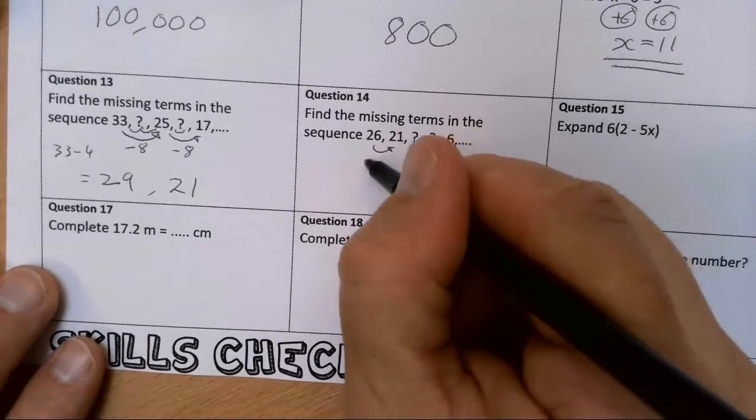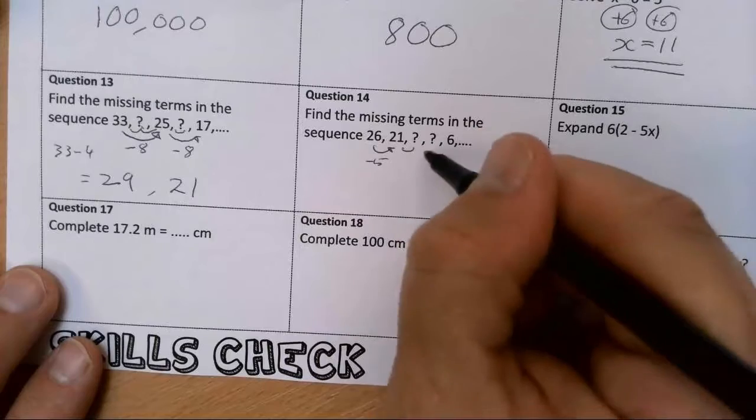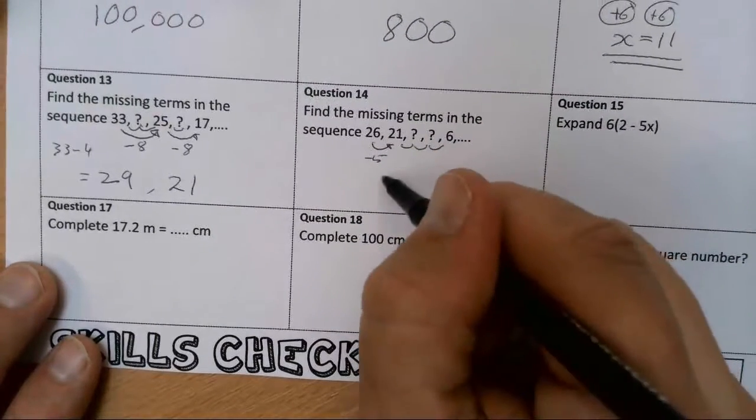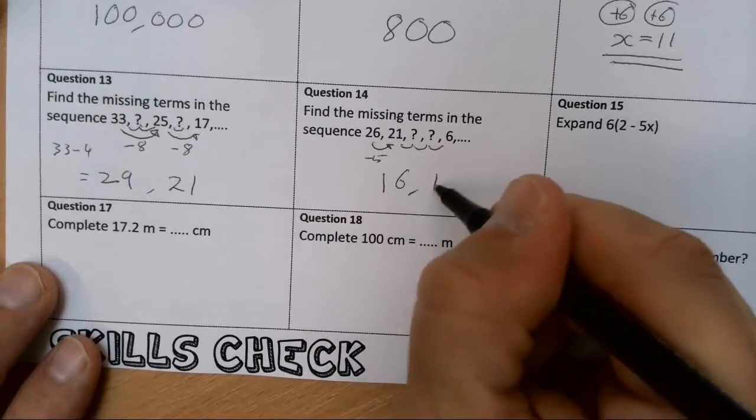This one I can see is just going down 5, so it's going to go down 5, and 5, and 5 again. So 21, down 5 is 16, down 5 is 11.